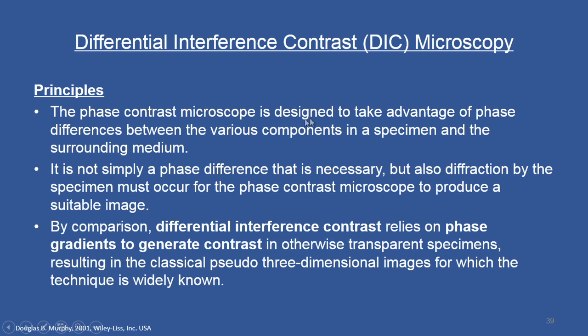The phase contrast microscope takes advantage of phase differences between specimen components and the surrounding medium, and diffraction by the specimen must also occur for it to produce a suitable image. By comparison, differential interference contrast relies on phase gradients to generate contrast in otherwise transparent specimens, resulting in classical pseudo three-dimensional images. However, DIC is not only popular for transparent specimens — it has been widely used for opaque specimens also, as I will demonstrate in the lab.